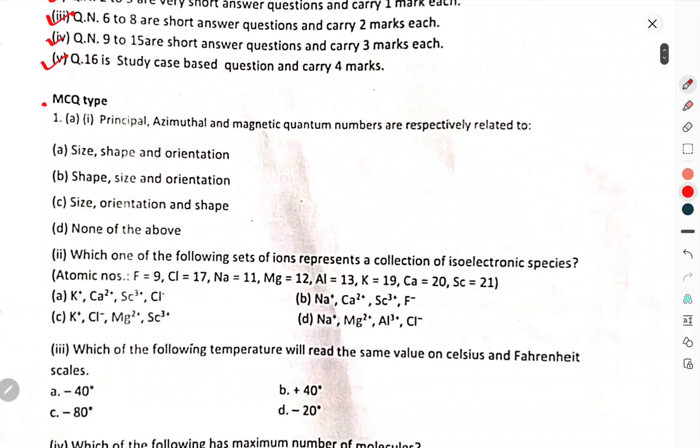MCQ type: First of all, principal, azimuthal, magnetic quantum numbers are respectively related to size, shape, and orientation.